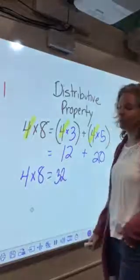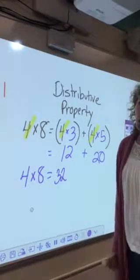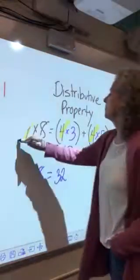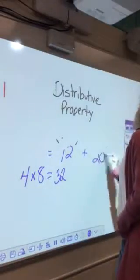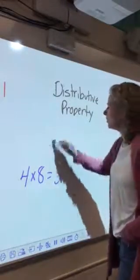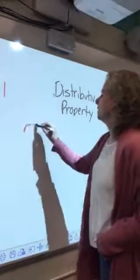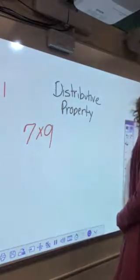That, boys and girls, is the distributive property. Now I'm going to show it to you what I consider as backwards, but I just want to model for you that it really doesn't matter which one you break apart. So let's do 7×9—but there's something in me that wants to break apart that 9.